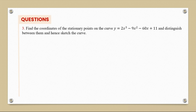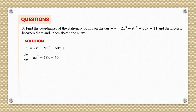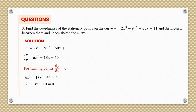Next question: find the coordinates of the stationary points on the curve y = 2x³ - 9x² - 60x + 11, distinguish between them, and hence sketch the curve. Differentiating gives dy/dx = 6x² - 18x - 60. Setting dy/dx = 0 and dividing by 6 gives x² - 3x - 10 = 0.